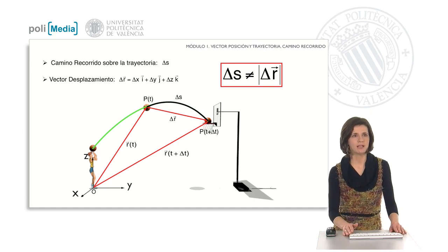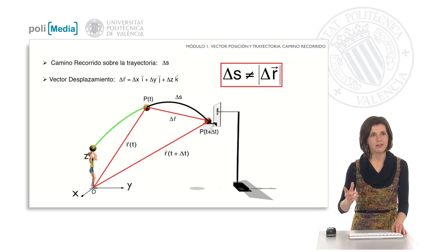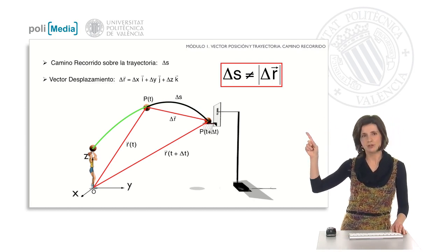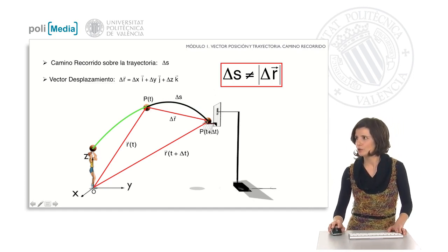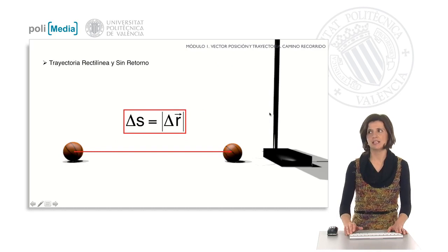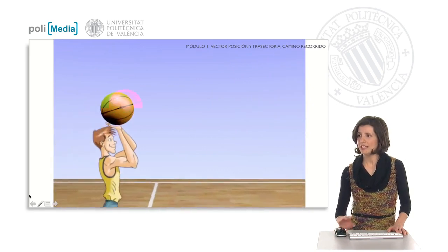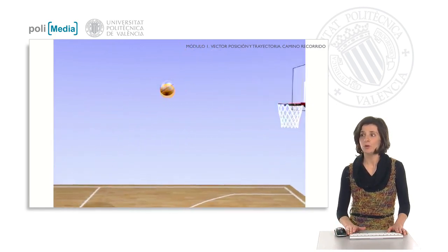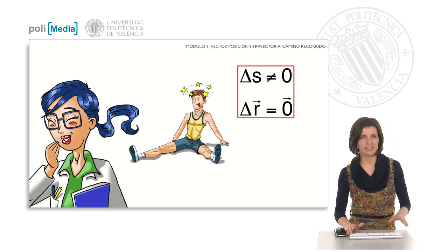The last magnitude to cover in today's class is the path traveled along the trajectory, which we will call the increment of s. It is a scalar quantity that is also related to the displacement, but concretely with the displacement on the trajectory — you see it here painted in black. The increment of s normally does not coincide with the modulus of the displacement vector; the length of this vector only coincides if the trajectory is rectilinear and non-returned. For example, in this case in which the ball leaves J's hands and returns to its initial position, the displacement vector is 0, while the increment of s — the path traveled along the trajectory — is evidently different from 0.